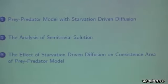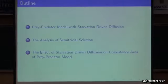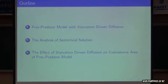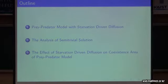Here is our outline for this talk. First of all, I will talk about the prey-predator model with starvation-driven diffusion, including the basic facts in the classical prey-predator model. Then I will analyze the semi-trivial solution for our model. Finally, we will conclude about the effect of starvation-driven diffusion on the co-existence area of the prey-predator model.